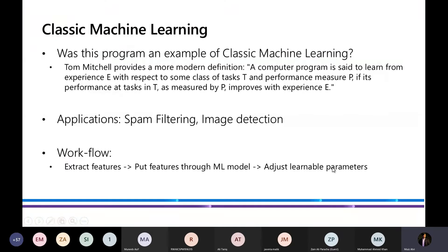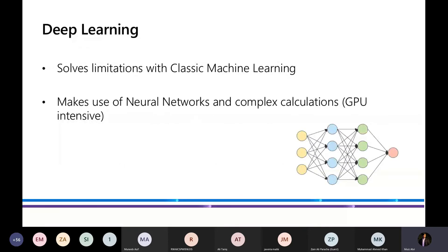Before discussing the difference between machine learning and deep learning, we need to know what deep learning is. Deep learning is a subsection of machine learning that solves the limitations of classic machine learning. Deep learning makes use of neural networks and complex calculations that are GPU-intensive. A neural network has nodes sending data to the next node and back — this is the mode of calculation used in deep learning. Each node tries to find the probability of a certain feature being true.